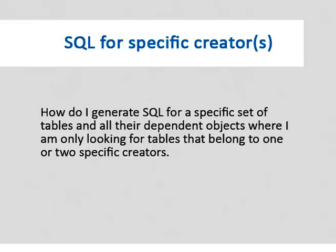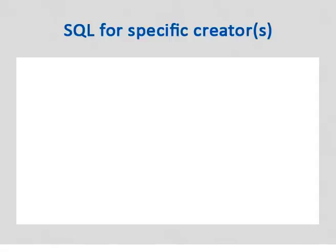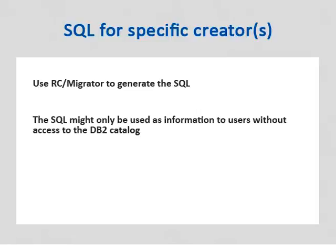How do I generate SQL for a specific set of tables and all their dependent objects, where I am only looking for tables that belong to one or two specific creators? I also do not want any utility statements. RC Migrator can be used to generate pure SQL. The SQL may not in fact be executed at all, but may be used to provide information about the contents of the DB2 catalog to users who don't have access to it.